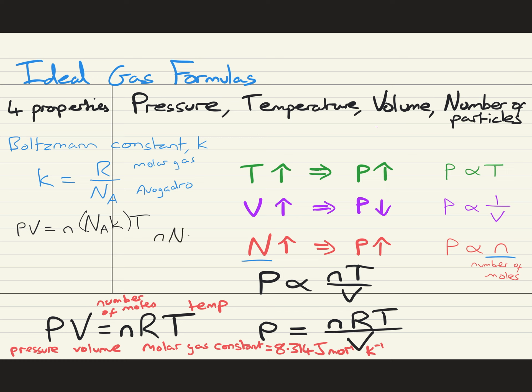This means that our formula PV equals NRT becomes PV equals NA KT. And since the number of moles N multiplied by the number of particles in a mole, which is what Avogadro's number is, is equal to the number of particles N, we get PV equals N KT.